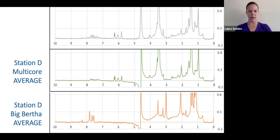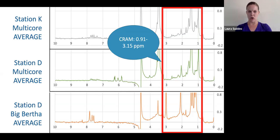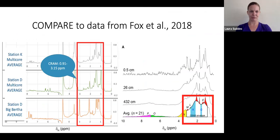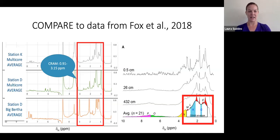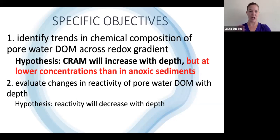I generated the average spectrum for each of these three cores and highlighted the appearance of the CRAM envelope. You might notice, just by eyeballing these spectra, that more CRAM appears in the deeper Big Bertha core than in the shallower multi-core cores. I then compared these average spectra with the average spectrum from Fox et al.'s research. We can see that my samples from the mixed redox sites appear to contain relatively less CRAM than Fox et al.'s samples taken from anoxic sediments, which lines up really neatly with my first hypothesis. I will continue processing samples from these two sites to see if the trend holds up and then move on to investigating my second hypothesis.